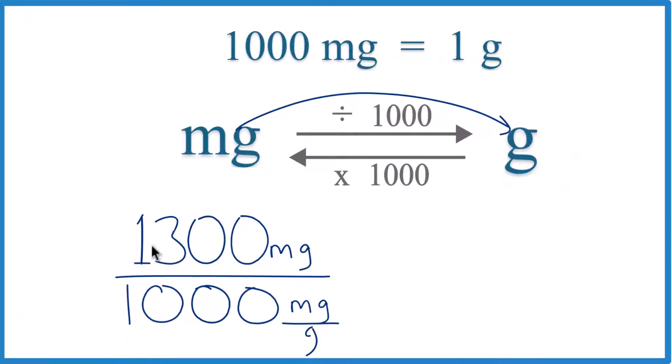So really, we're just dividing 1,300 by 1,000, and you end up with 1.3. That would be the grams. But look at the units, because we have milligrams on top and the bottom, 1,000 milligrams per gram. That's the conversion factor. That's why we divide by 1,000.